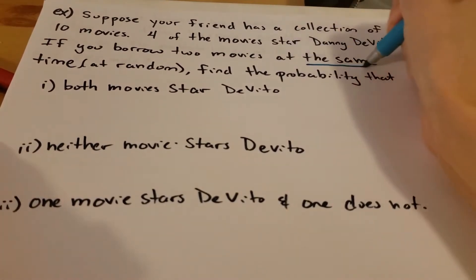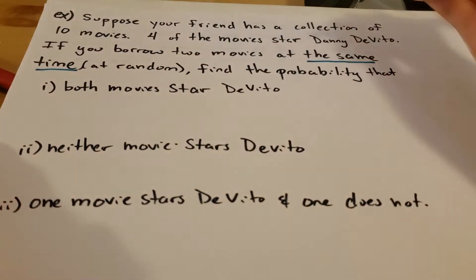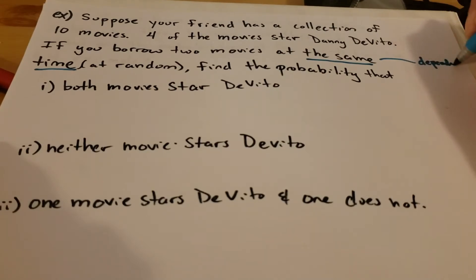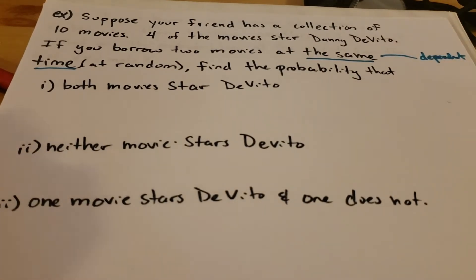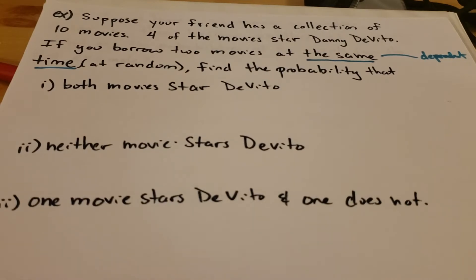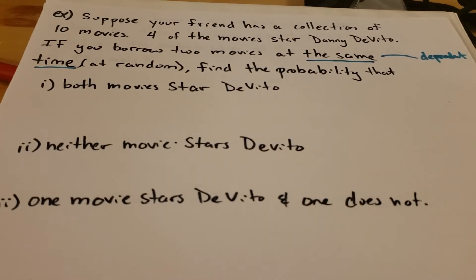Since we're borrowing the movies at the same time, this tells us these are dependent events. We're taking both of them out — it's the same as if we were removing one movie and then taking a second movie out without replacement. You can't possibly get the same movie twice. If it were possible to get the same thing two times in a row, it could be an independent event, but we're taking one out and then another out, so these are dependent events.